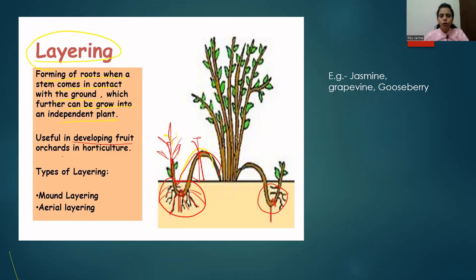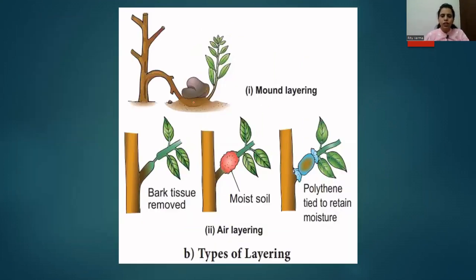The part of the stem which is above the soil starts growing as an individual plant and is completely cut and separated from the parent plant. This layering method is useful in developing fruit orchards in horticulture. There are two types of layering: mound layering and aerial layering. In mound layering, the lowermost branch of the tree is taken and placed under the soil, and a heavy weight is placed above this branch so it does not come out of the soil. After a few days, adventitious roots develop from that part of the stem.